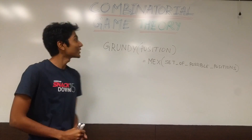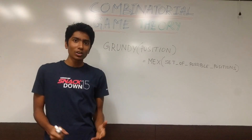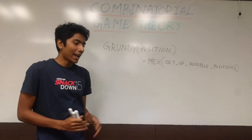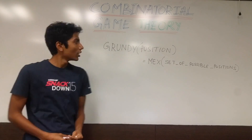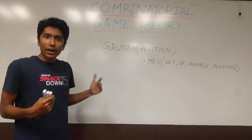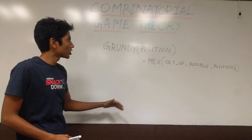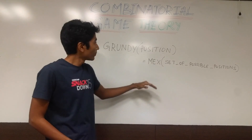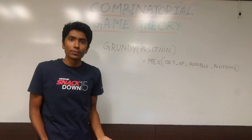Hi guys, this is GKCS. We are going to be talking about the second part of Combinatorial Game Theory now. And if you haven't seen the first part, you can check that out. A quick recap: to find the Grundy number of a given game position, you need the minimum excludant of the set of all possible positions reachable from that position.